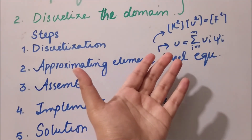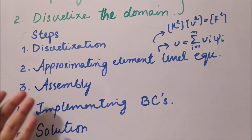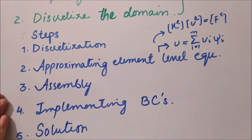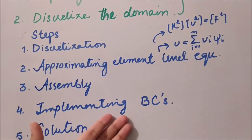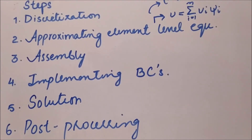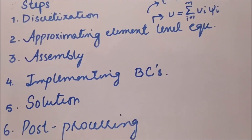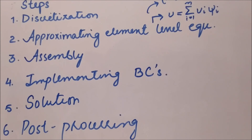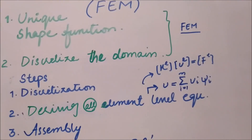The rest of the steps are exactly the same. After deriving the element-level stiffness matrix equations, we assemble them, implement the boundary conditions, then find the solution of the assembled equations. Finally, we do post-processing of the results for computation of the gradient of the solution or the gradient at a certain point.